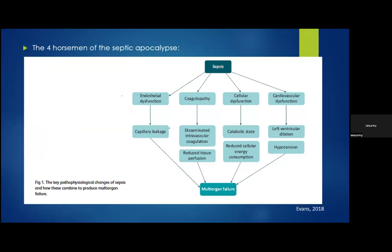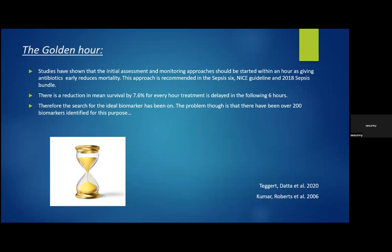The four horsemen of the septic apocalypse describe the main mechanisms in sepsis leading to multi-organ failure. First, endothelial dysfunction causes capillary leakage and can lead to multi-organ failure. Second, coagulopathy in the form of DIC and blockage of microvasculature results in reduced tissue perfusion and subsequently multi-organ failure. Third, cellular dysfunction leads to reduced cellular energy consumption. Fourth, cardiovascular dysfunction in the form of left ventricular dilatation and hypotension, as a means of trying to maintain cardiac output in the setting of cytokines that reduce systemic vascular resistance. All of this leads to multi-organ failure.